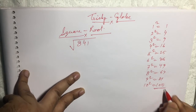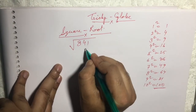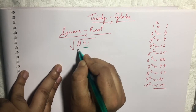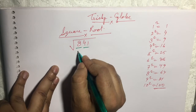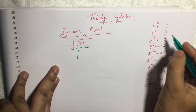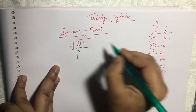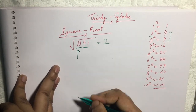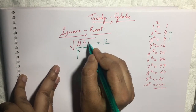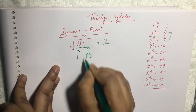Now you have to make a pair from the right-hand side. For 841, this is one pair and this is another pair. For the first pair we have 8. Now we have to check: 8 is in between 4 and 9, so we have to take the smaller number, that is 2.